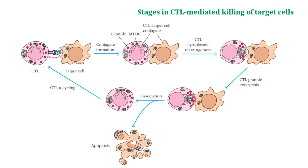Now the stages in CTL-mediated killing of the target cell. The first stage is conjugate formation. The TCR receptor on the CTL interacts with processed antigen on MHC class I molecules on the appropriate target cell — either dendritic macrophages or dendritic cells — leading to formation of CTL-target cell conjugation. This process requires energy and is calcium-dependent.